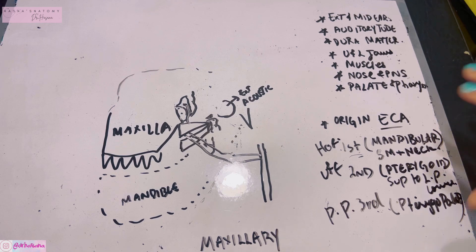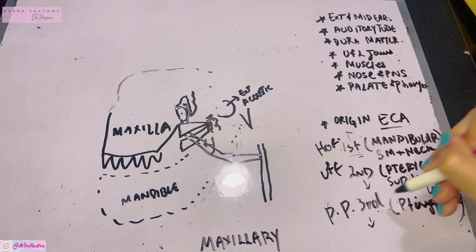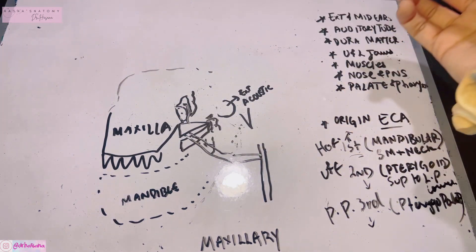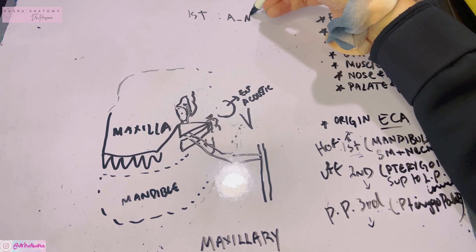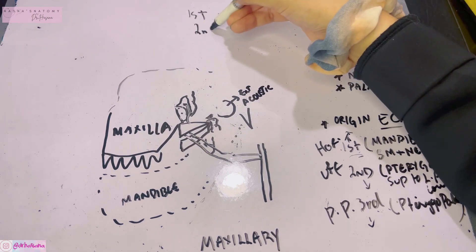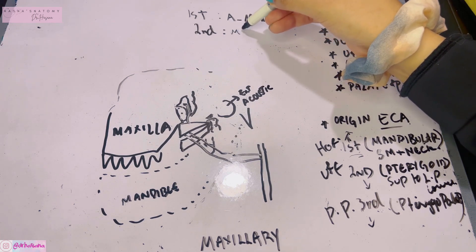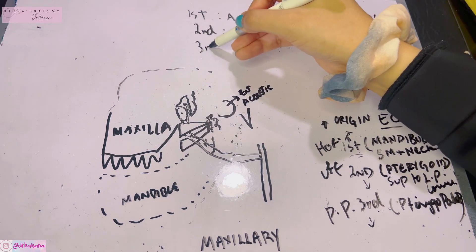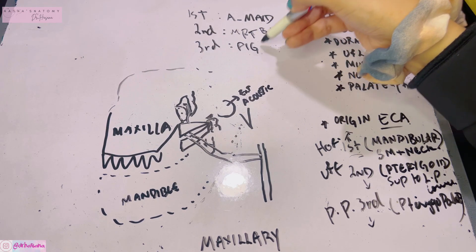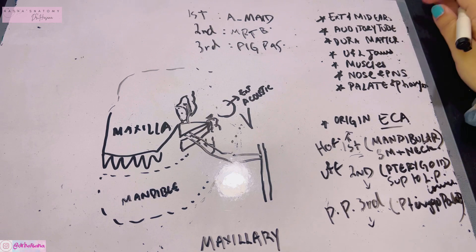Now let's talk about the branches, which is where it gets tricky. The first part has branches remembered by the mnemonic A-MADE. The second part has branches that supply all the muscles of the temporal and infratemporal region. The third part branches are remembered by the mnemonic PIG PASS.